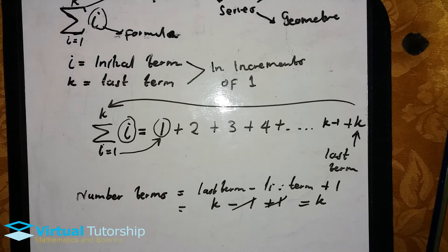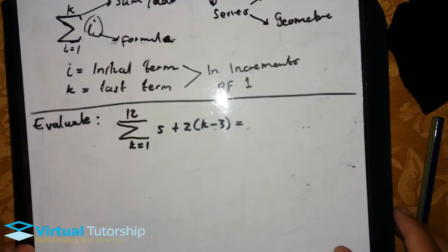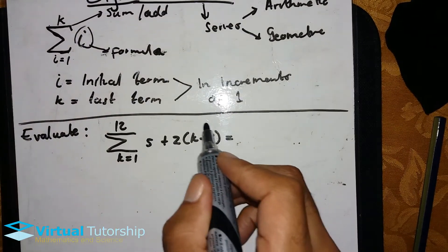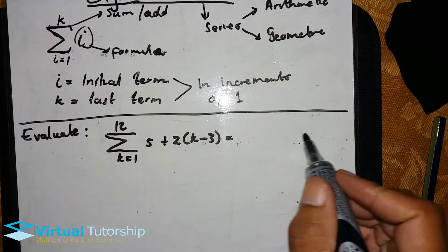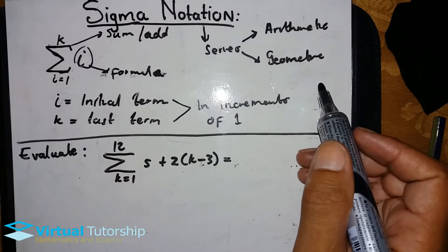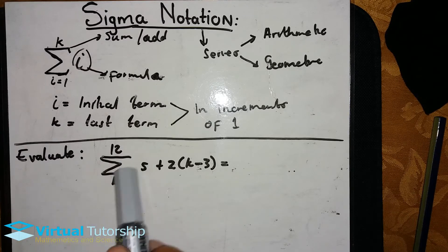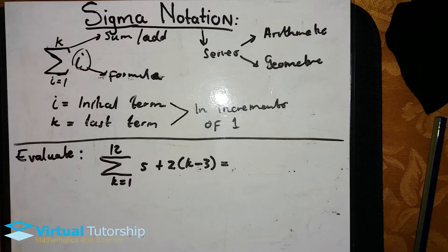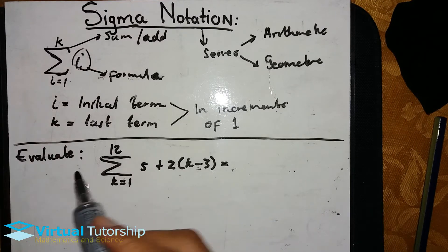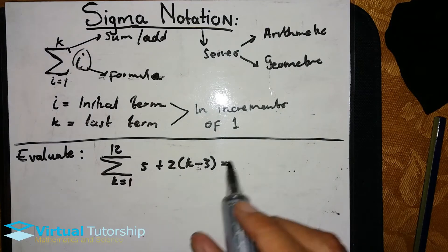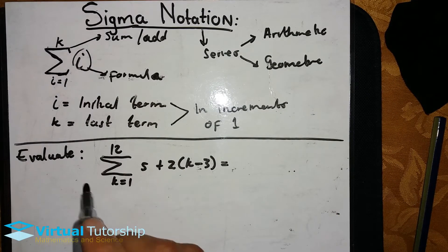Let's take another example. In this example, this Sigma notation, this formula here, could represent an arithmetic series or a geometric series. First thing we'll do whenever dealing with a series that involves Sigma notation is expand it, just like earlier when we expanded this thing and wrote it as a series.